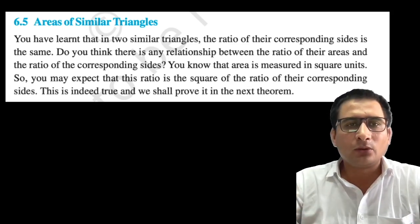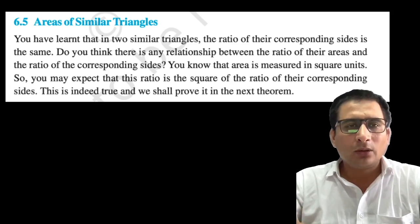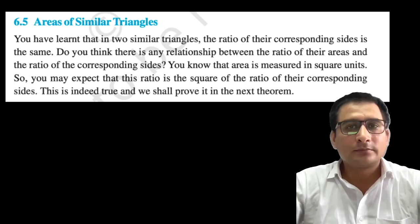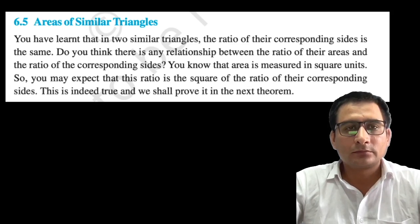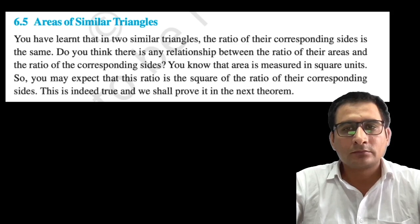There is a very important theorem. We are going to discuss about that theorem and look at the proof as well. You have learned that in two similar triangles, the ratio of their corresponding sides is the same. Do you think there is any relationship between the ratio of their areas and the ratio of corresponding sides? You know that area is measured in square units, so you may accept that this ratio is the square of the ratio of their corresponding sides. This is indeed true — we shall prove it in the next theorem.